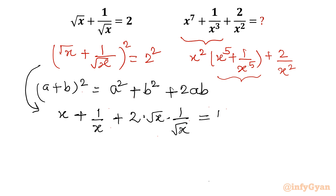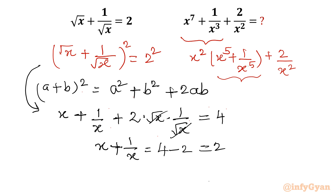The right-hand side is 2 squared, which is 4. The 2ab term cancels out, and taking away 2 from both sides gives x plus 1 over x equal to 4 minus 2, which is 2. Let us call this equation number 2: x plus 1 over x equals 2.